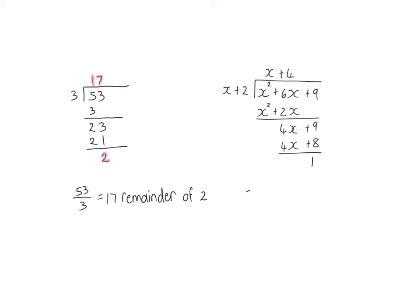So, here we can say that x squared plus 6x plus 9 divided by x plus 2 will give us an answer of x plus 4 with a remainder of 1. This very long procedure can, however, be substituted with two theorems to make your calculations much more effective.